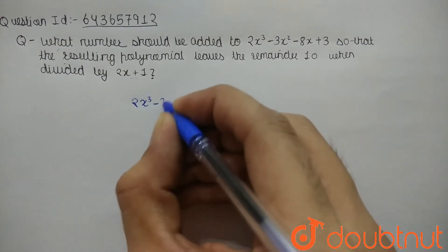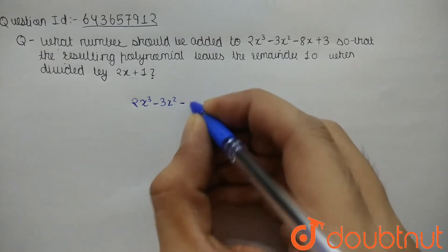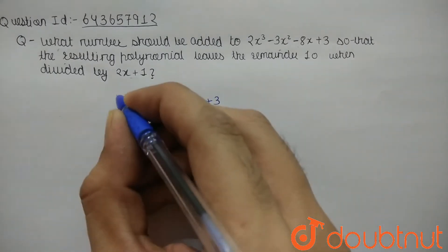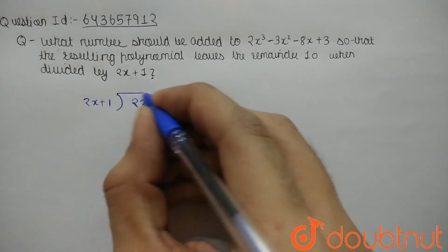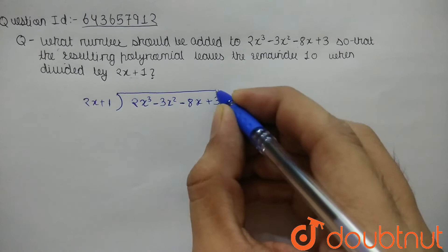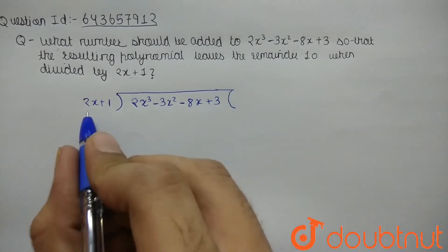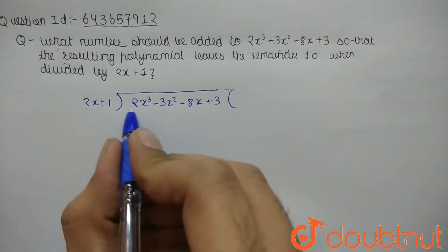Now what we need to multiply to 2x to make it 2x³? x² (sorry, x²). So 2x into x² is 2x³, then 1 into x² is x². Sign will be changed, minus minus